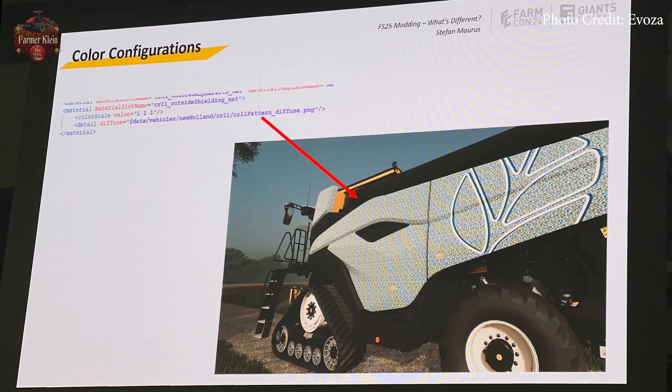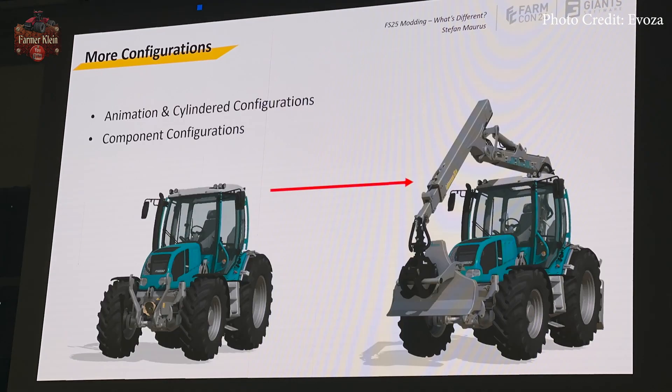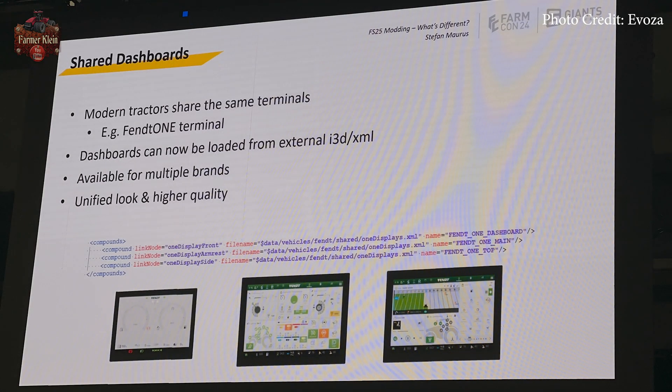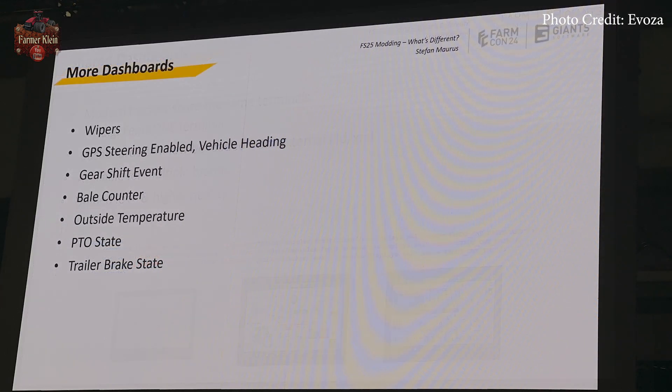Due to the new material system, no more base material entries are listed; instead, materials are referenced inside the i3d file via a slot name. There will be shared dashboards — for example, all current Fendt tractors use the same Fendt one terminal. Dashboards are now loaded from external i3d and XML files, available for multiple brands, providing a unified look at higher overall quality. Mods can now call brand-specific standard dashboards from the base game, with additional dashboards existing for wipers, GPS heading, and gear shifting.